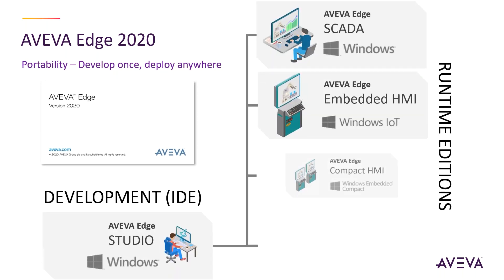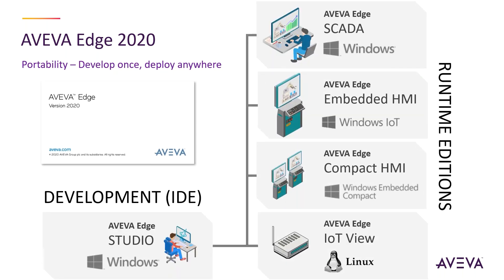We changed the name not only of the product, but also the runtime editions available in Aviva Edge. One of the main value propositions is that we have one single development environment, which we now call Aviva Edge Studio, which runs on pretty much any Windows operating system — Windows 10, Windows Server 2016, 2019, 32 or 64 bits — and allows you to create applications that can be deployed across different operating systems.